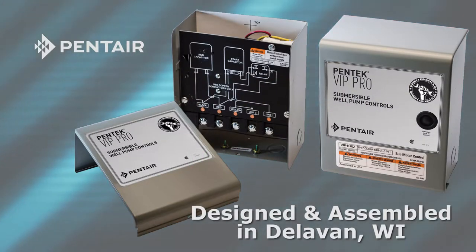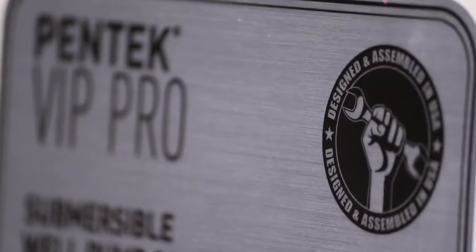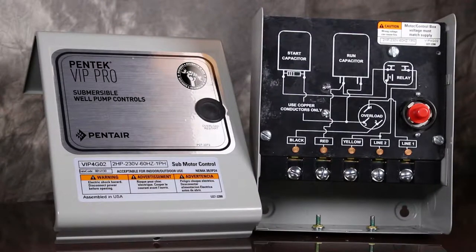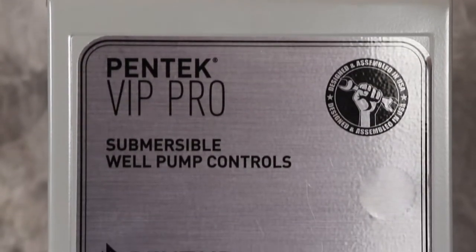Introducing the newly improved Pentair VIP Pro Series Control Box. The Pentair VIP Pro Series Control Box is a capacitor start, capacitor run box that features universal controls designed to work on all manufacturer single-phase, three-wire submersible motors ranging from half to five horsepower.